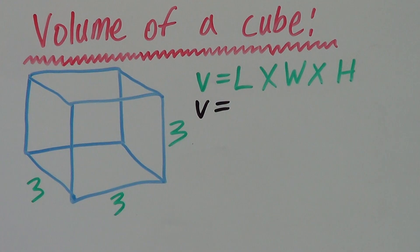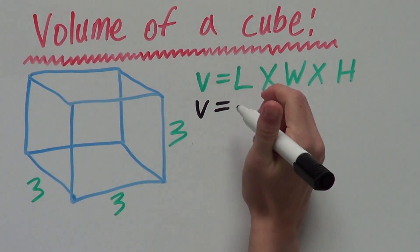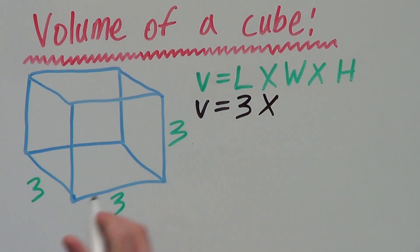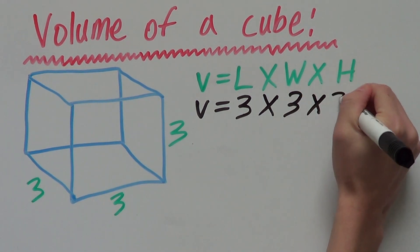If we substitute our values in, our volume equals length, which is 3, times our width, which is also 3, times our height, which is also 3.